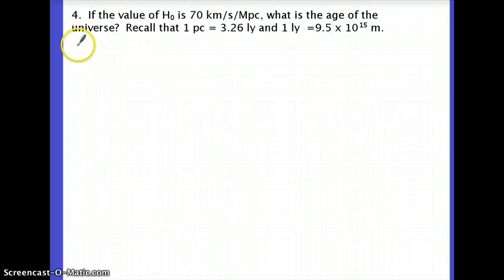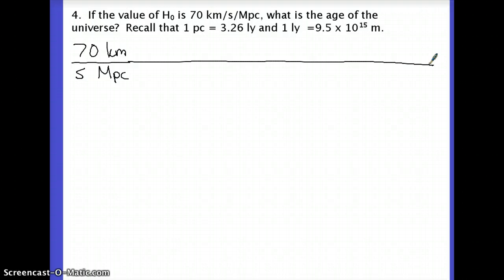I'm starting with 70 kilometers per second per megaparsec. The seconds and the megaparsecs both go on the bottom. Now I want to get the kilometers and the megaparsecs down to meters - just meters on top and bottom so they'll cancel. Let's start with the kilometers. There's a thousand meters in one kilometer, so at this point my kilometers are going to go away and I now have meters and megaparsecs.